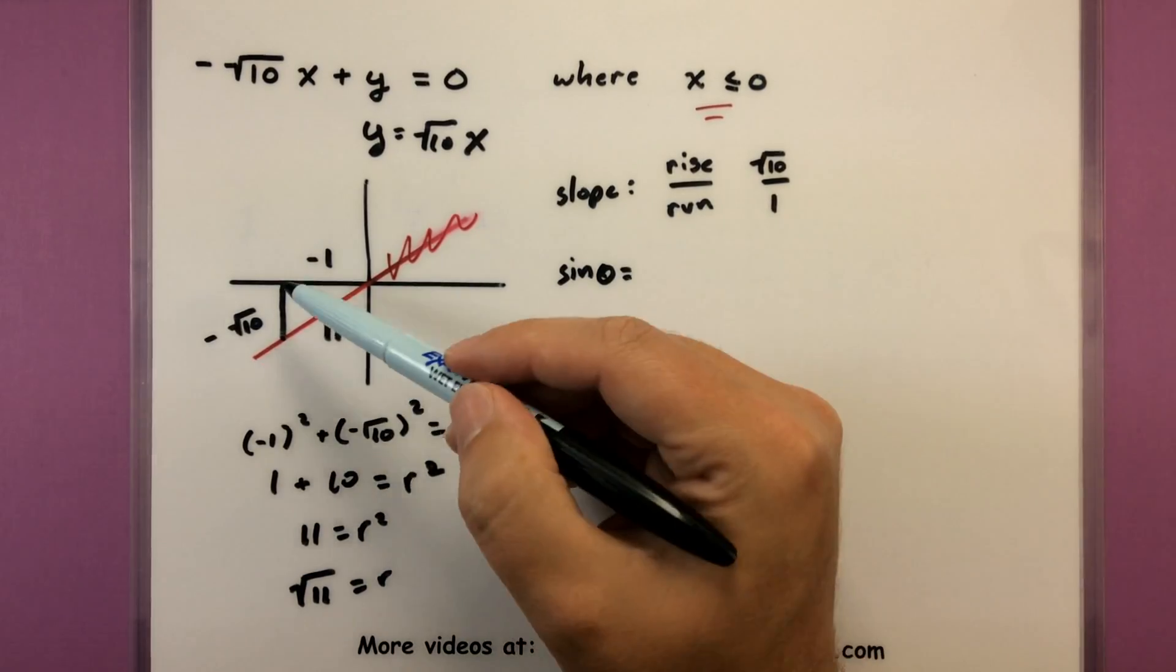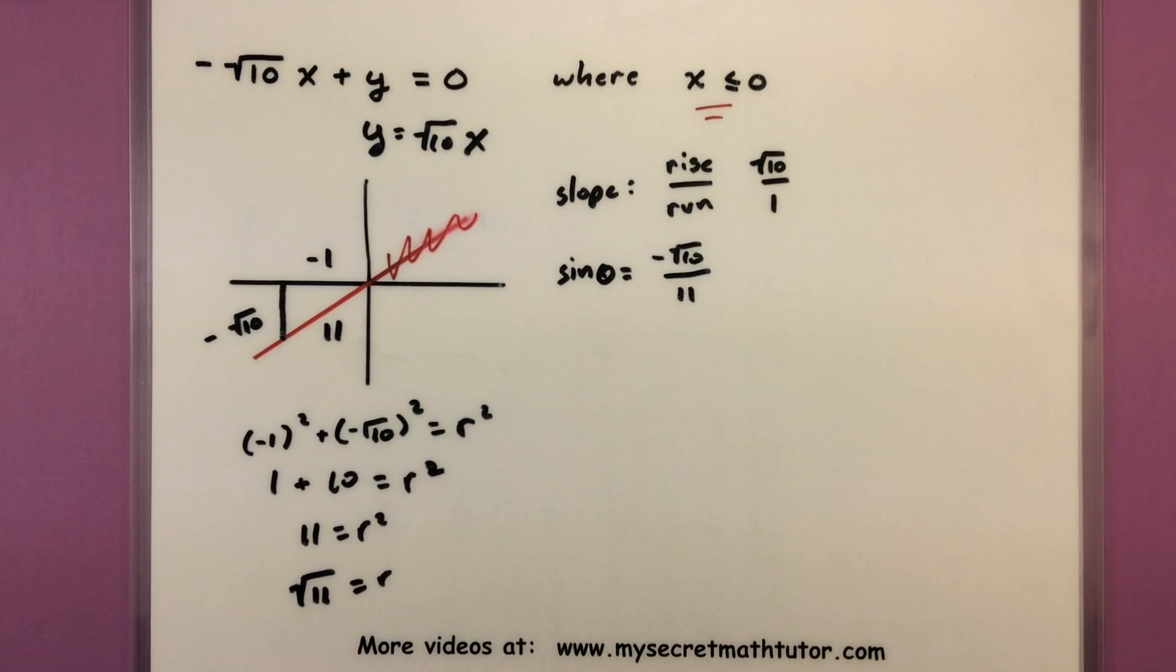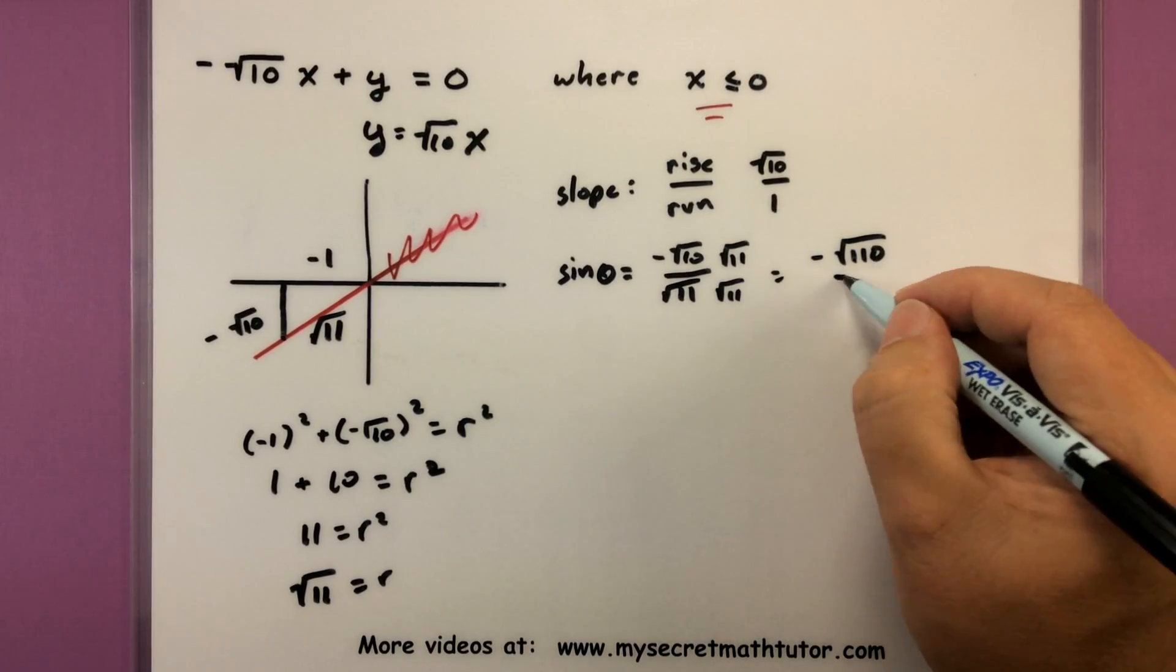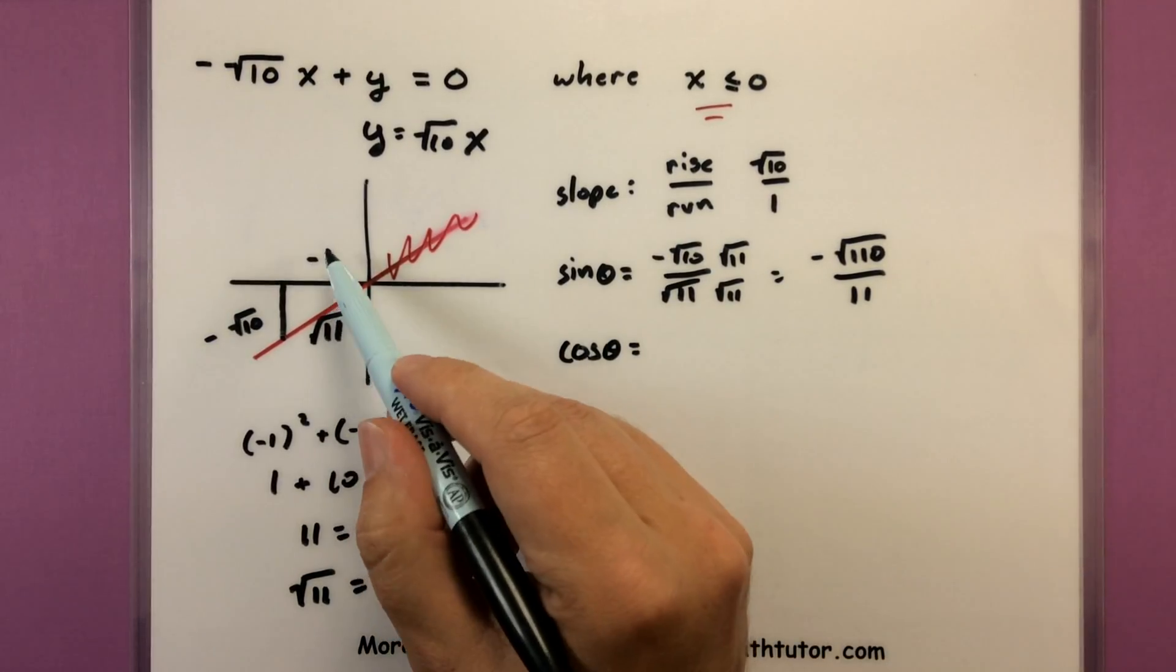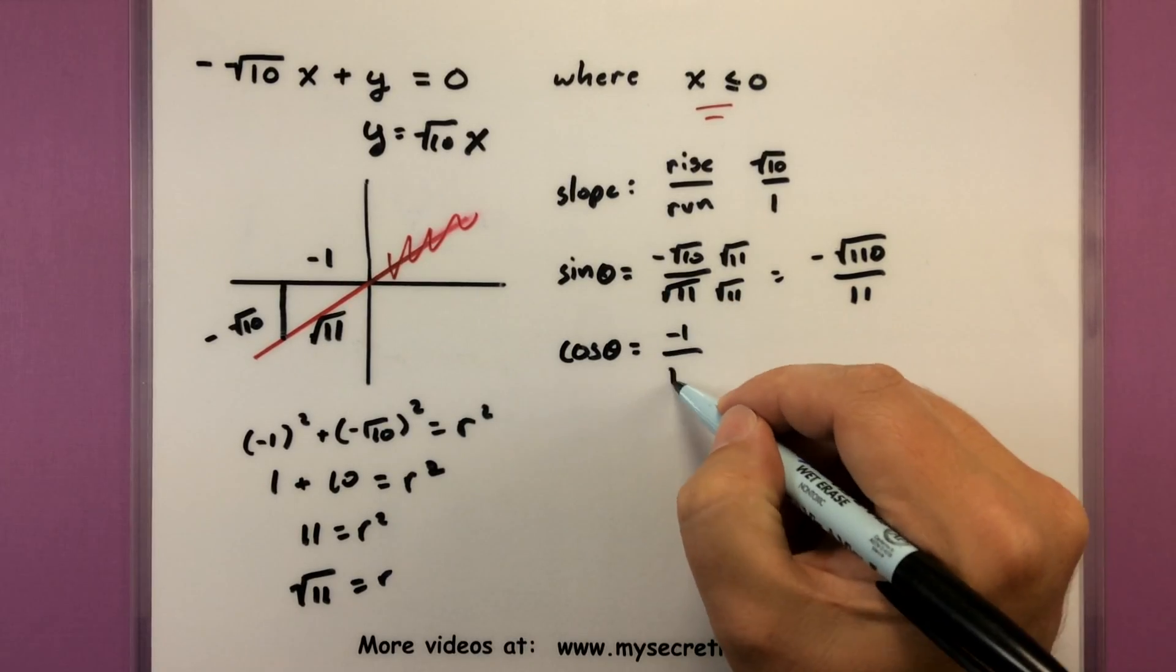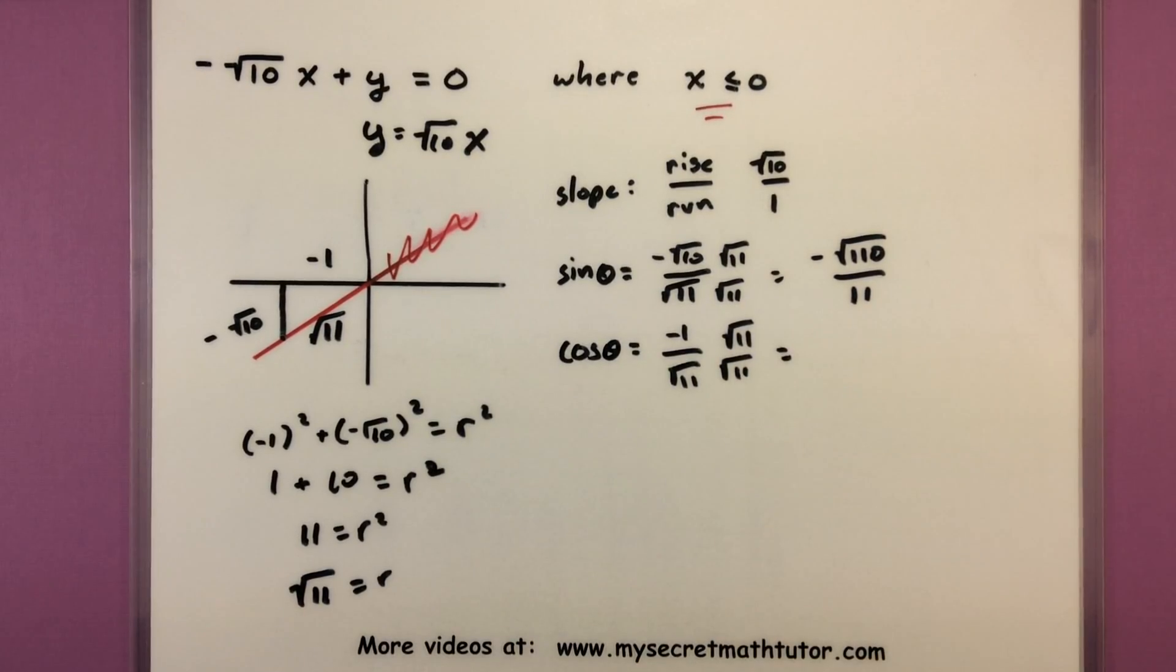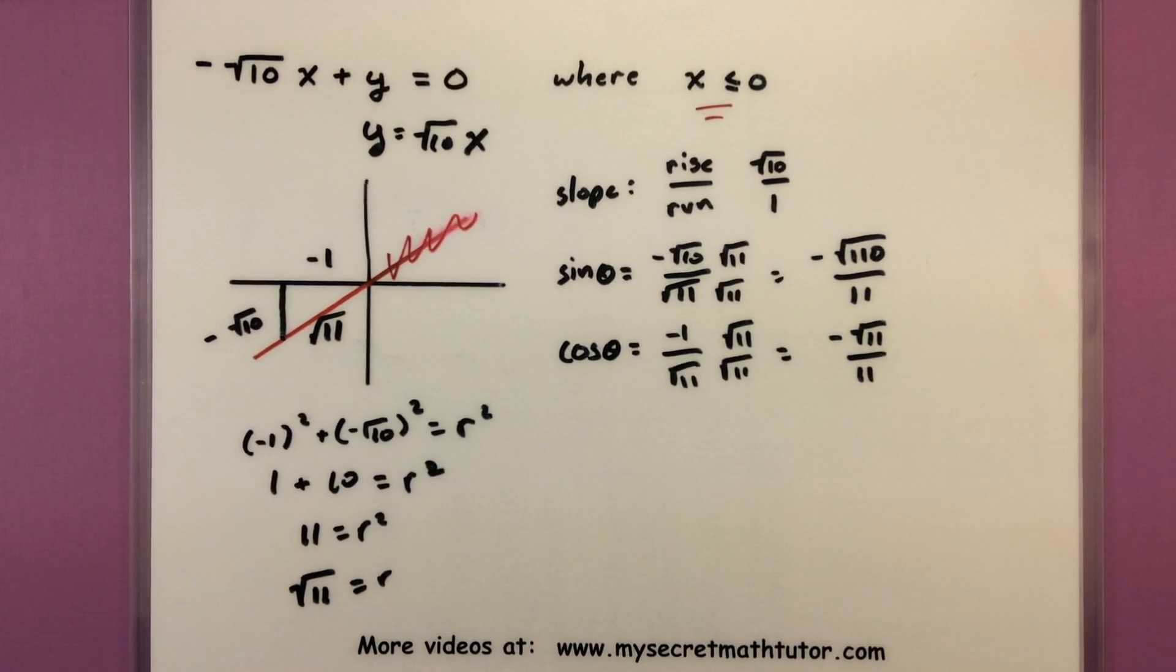Starting off with sine. Sine is our opposite over our hypotenuse, so negative square root of 10 all over square root of 11. Looks like we've got a little bit of extra work to do. We got to rationalize the denominator here. This will give us negative square root of 110 all over 11, and now I have my first value. Moving on. Cosine. Cosine is my adjacent over the hypotenuse, so negative one over the square root of 11. And it looks like this one needs some rationalizing in the denominator as well. Let's go ahead and do that by multiplying the top and bottom by the square root of 11. So negative square root of 11 all over 11.